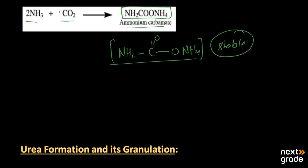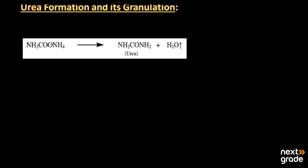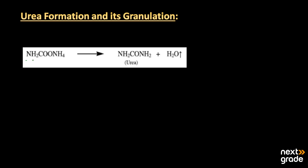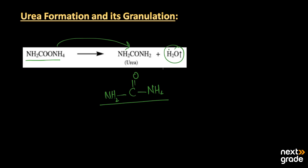Ammonium carbamate is an unstable compound that rearranges itself to produce a new compound — urea. This is the second step, known as urea formation. The ammonium carbamate decomposes, and through evaporation it converts into urea (with the structure C=O with NH₂ groups on both sides) along with the release of water in the form of steam.